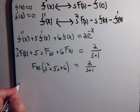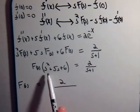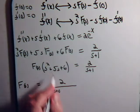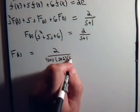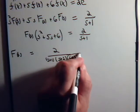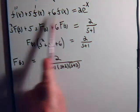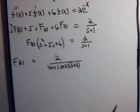So F(s) equals 2 over (s+1) times (s+2) times (s+3), since s squared plus 5s plus 6 factors as (s+2)(s+3). We're trying to solve for f(x) that satisfies this differential equation, and right here we've found the Laplace transform of that function. We don't know f(x) yet, but we know its Laplace transform. It looks like we'll need to use partial fractions to break this up.